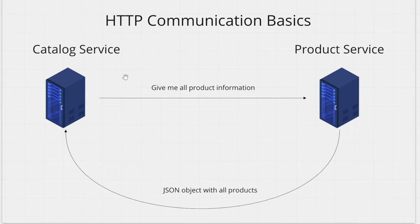Let's say you have two microservices. One service can render a catalog of all products for a given user, and the other service has details about individual products. To render this catalog, the catalog service needs information about each of the products. This information resides in the product service. So how does the catalog service get this data from the product service?